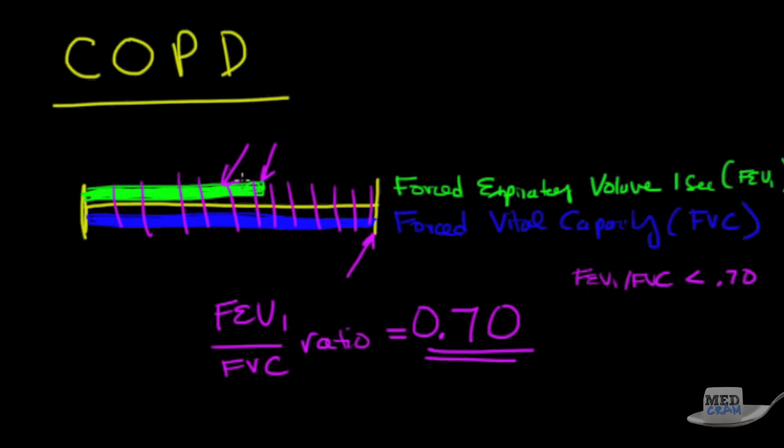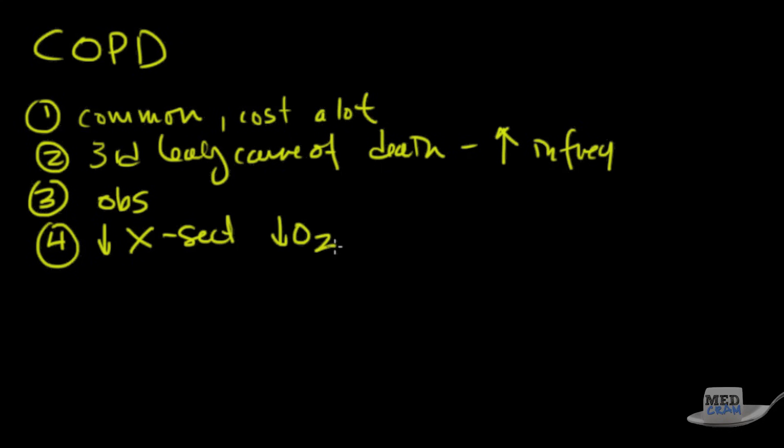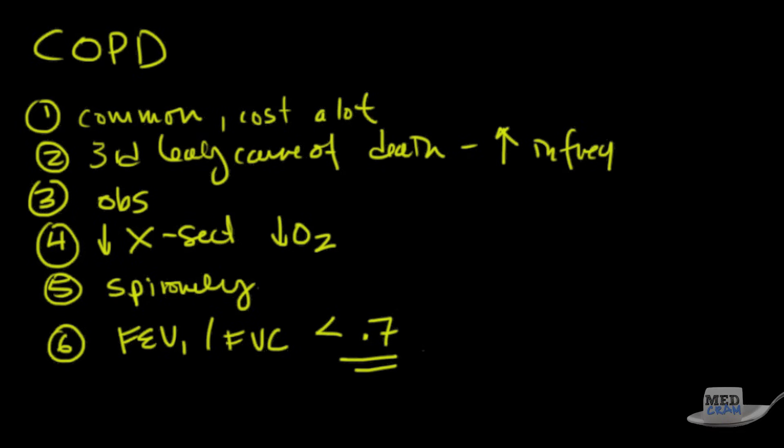And of course, the lower the FEV1 number is, the worse your COPD is going to be. So let's review. COPD is one, common, it costs a lot. Number two, it's the third leading cause of death, and it's the only one of the five that are actually increasing in frequency. Number three, causes difficulty with breathing out, that's obstruction. Number four, reduces the cross-sectional surface area, causes drops in oxygen. You diagnose it by spirometry. And finally, number six, the diagnosis is the FEV1 divided by the FVC is less than 0.7. Thank you for joining us.